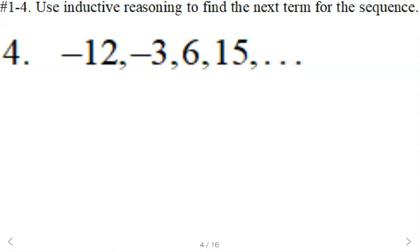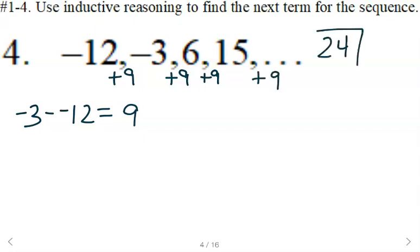On this one, it's increasing, getting bigger from left to right. If you take negative three and subtract negative 12, you get positive nine, or another way to say that is you're adding nine. And then if we continue adding nine, negative three plus nine is six, six plus nine is 15, 15 plus nine gives us 24 for the next term.